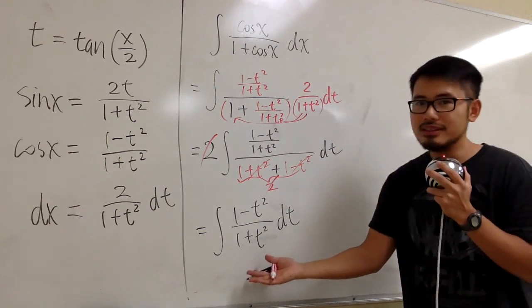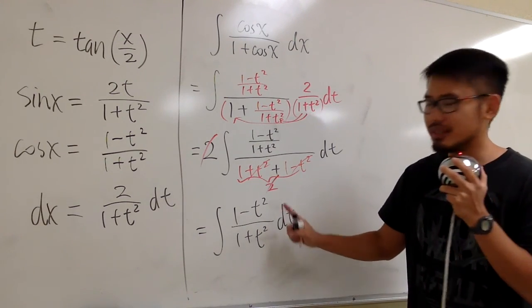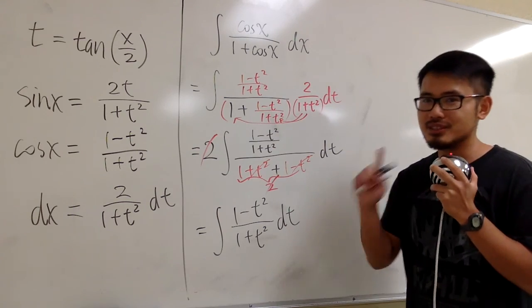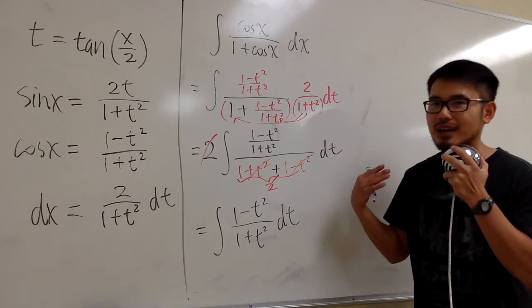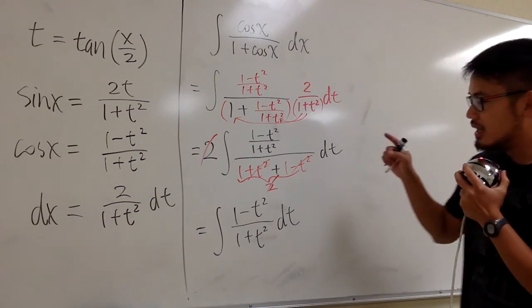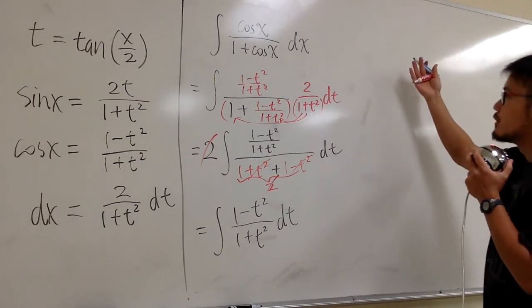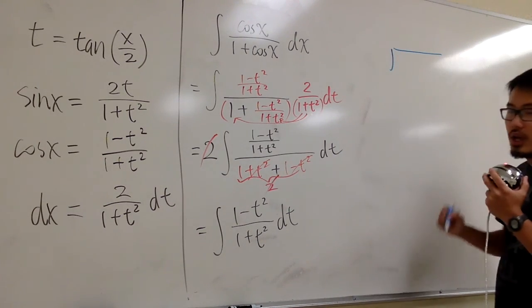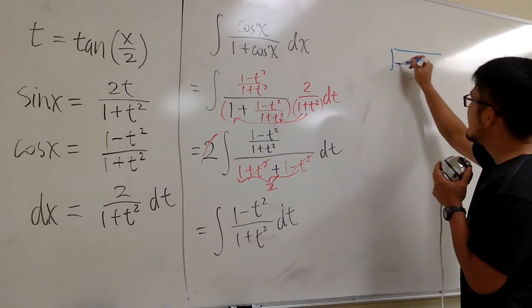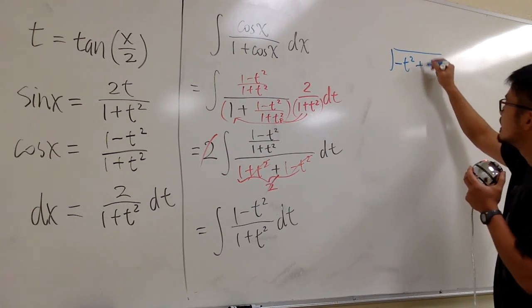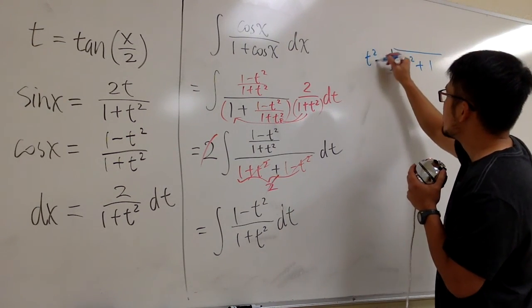This is just a regular rational expression. Because the degree on top equals the degree on the bottom, we have to use long division. Sometimes we may end up needing partial fractions, but here we're lucky — long division will take care of it. So I'll put (−t² + 1) inside and (t² + 1) on the outside.